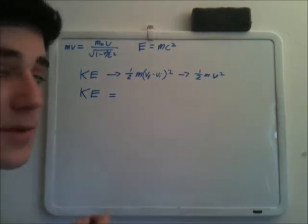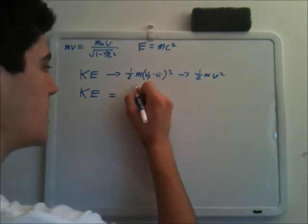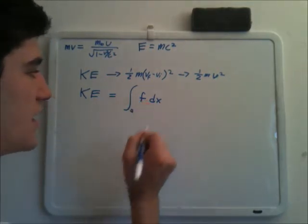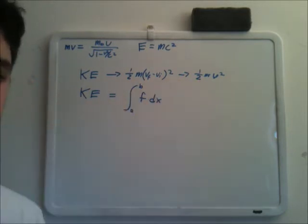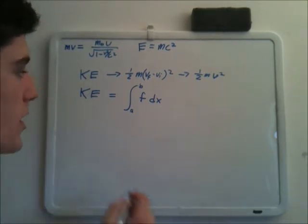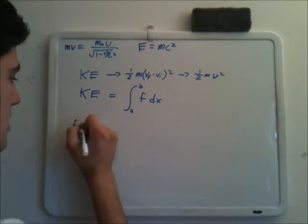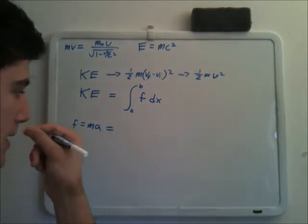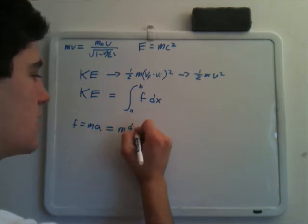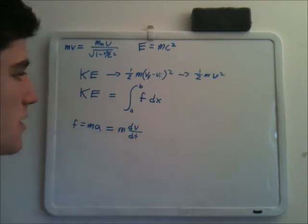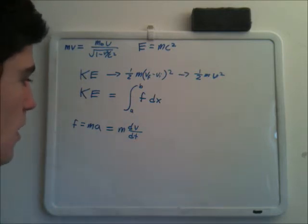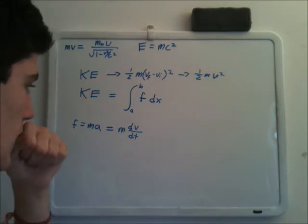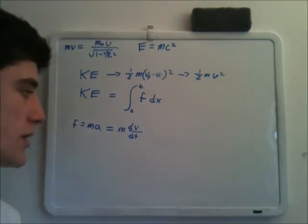So we know that work equals the multiplication of force times distance, but if variables are changing, then we're going to have to represent it as an integral of force with respect to distance, but it's going to be a definite integral, because we go from one velocity to another velocity. But now let's look at these variables a little bit more. We know that force over here, well let's write over here, force equals mass times acceleration, right? Which is also represented as mass times dv over dt.